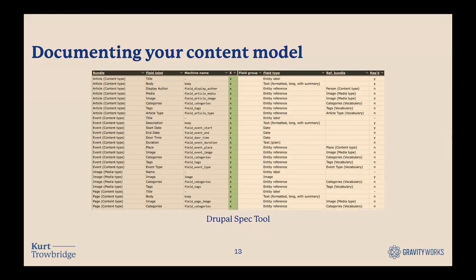We do the same thing with documenting our content structures — our content model. We do a lot of Drupal work, but this technique would apply to any CMS development. We usually do these in Notion, but we've started moving them into a Google Sheets template. This is similar to Acquia's Drupal Spec Tool, which is online and open sourced. It breaks down your content structures into things like fields, view modes, and image styles — planning it all out in a spreadsheet where it's easy to change. The benefit is you're doing early planning while it's still easy to make changes, and you're thinking through how your content types and other structures connect and interact.